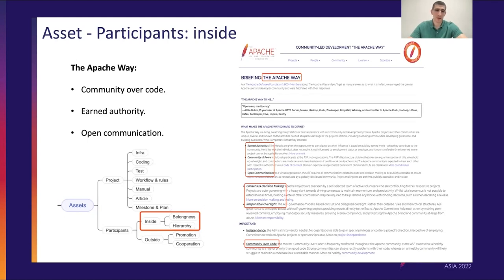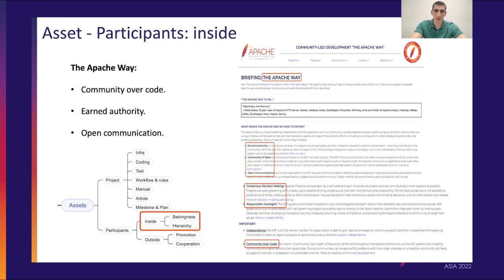One more thing to talk about when it comes to community are the participants. The participants are essential — you have both inside participants and outside participants. For inside participants, these are people already somehow part of your community, and you should give them a true feeling of belonging. You should make them feel at home and foster a warm and welcoming community that promotes an exchange of ideas and innovation. I put here the Apache Way because I think it's one of the best, if not the best, code of conduct I've seen across communities. Some of the staples we all know are: community over code, earned authority, and open communication.